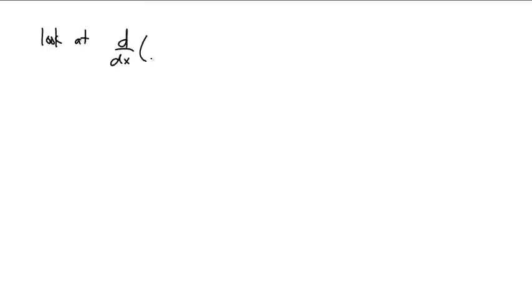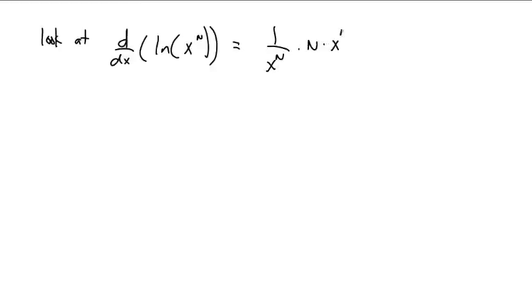How am I going to use this? Let's look at the derivative of the natural log of x to the nth power. The derivative of ln(x^n) — we know that the derivative of ln(x) is 1/x, and we have the chain rule. So the derivative of ln(something) is 1 over that something, times the derivative of that something, which is n times x^(n-1). We have n x's down below and one less n x up top — this simplifies to n over x.